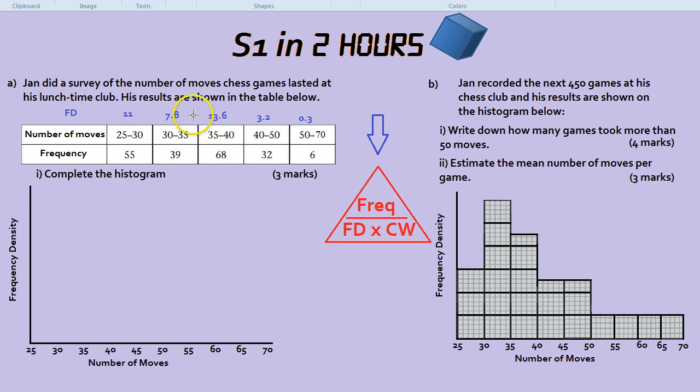So the group 25 to 30 goes up to 11. But what's the biggest group? It's this one. It goes up to 13.6. So we can use that information to do our scale. So let's do at the top, for example, 14. So we know the biggest is 13.6. We had to do all of them before we knew which one was going to be the biggest.